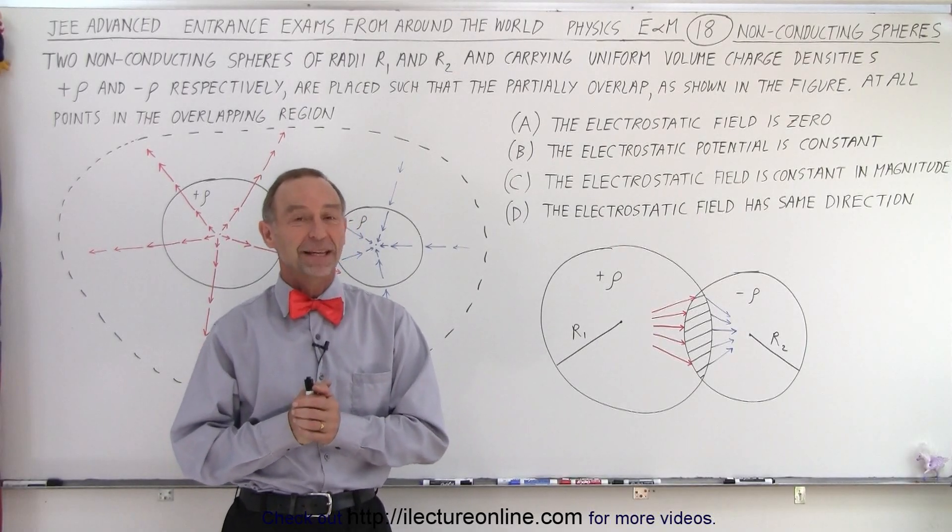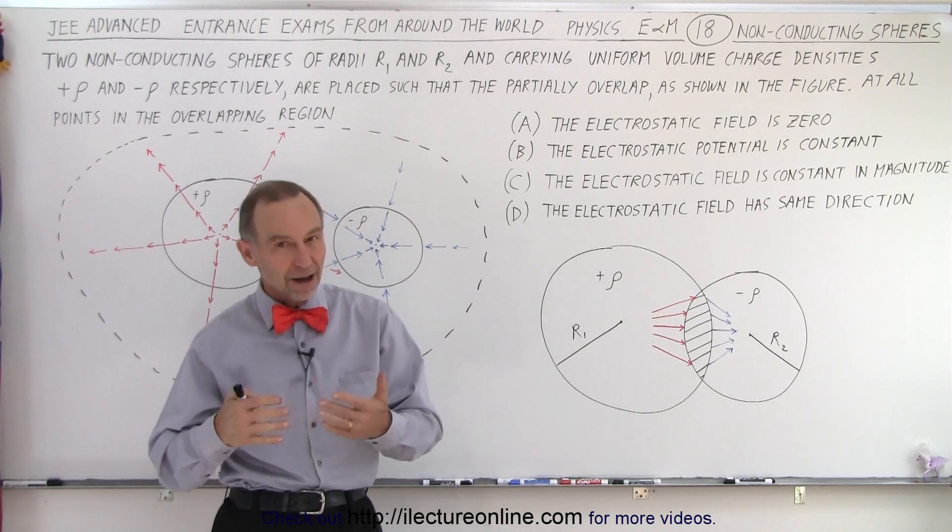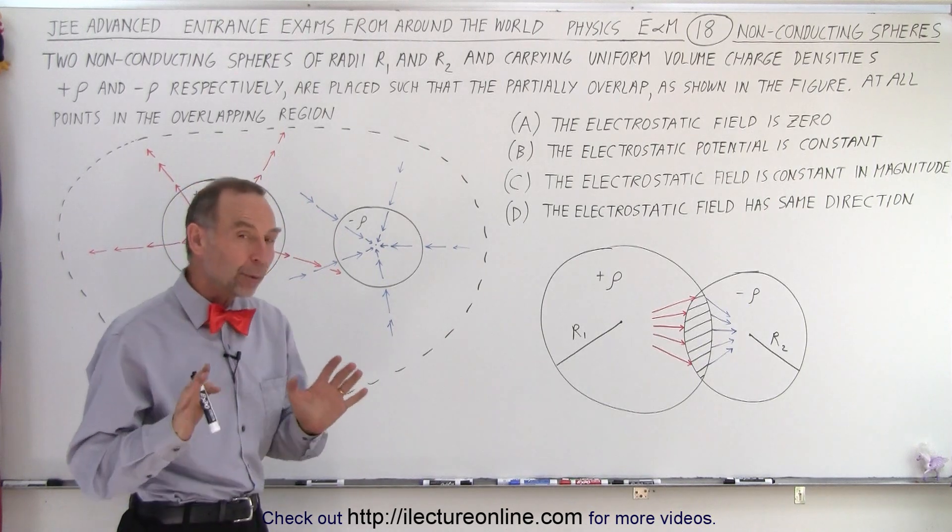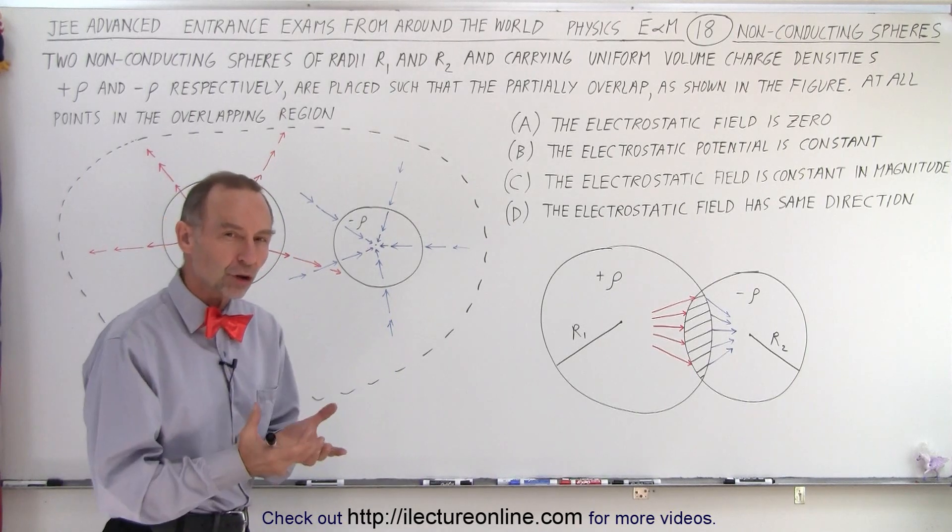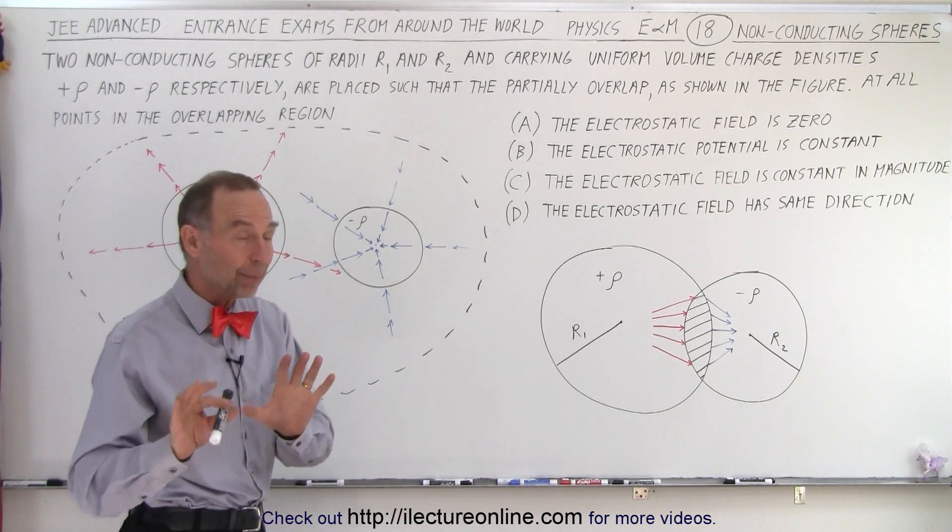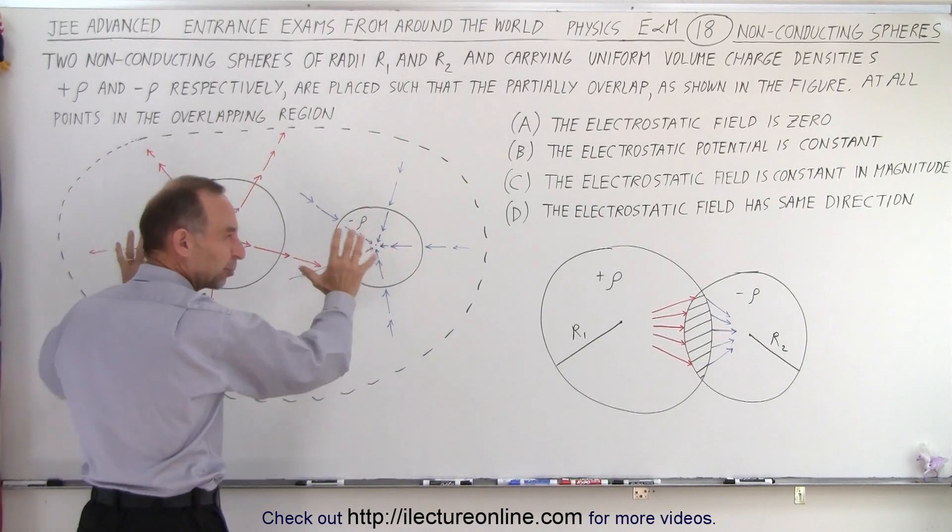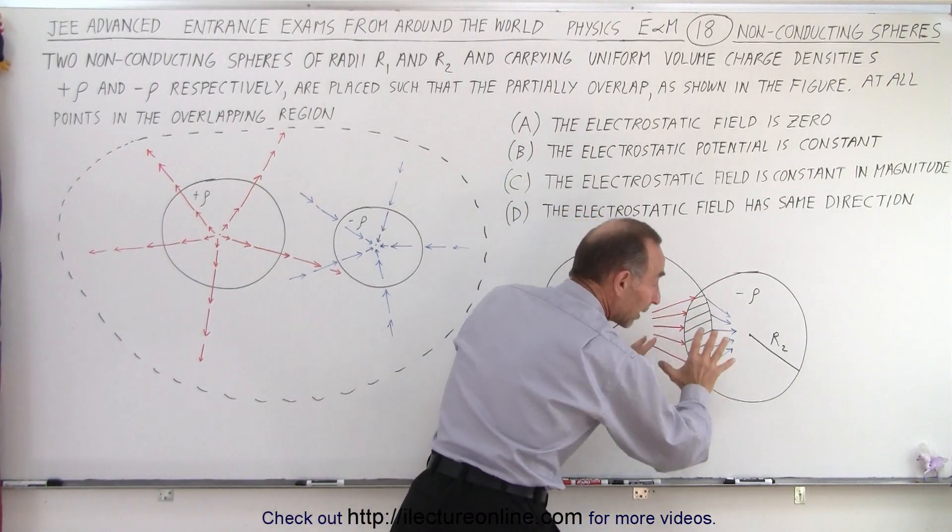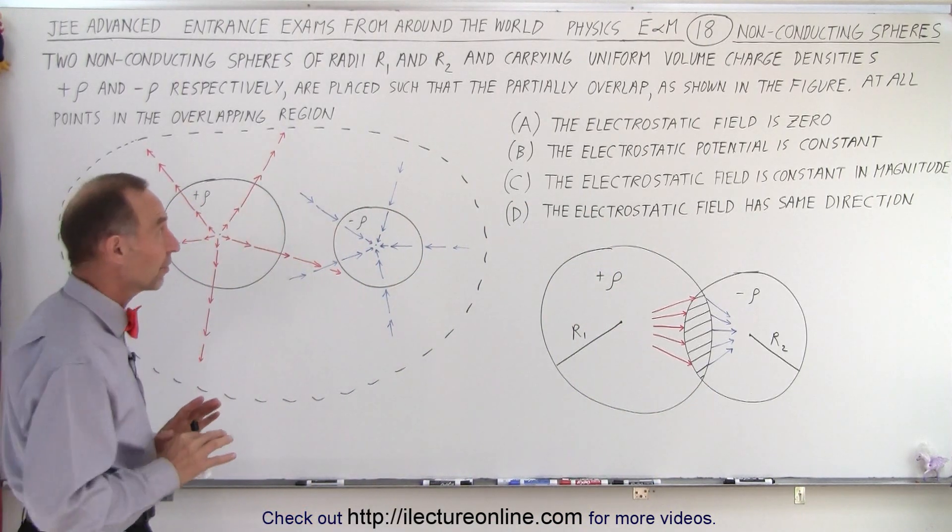Welcome to Electronline, and here's another challenging question from the JEE Advanced Test on physics, specifically on electricity and magnetism. What we have in front of us is two non-conducting spheres, and they're filled with charge so that the charges cannot move. Keep in mind that on the test, what's inside the dashed line here was not part of the test. I just put it on the board already to save some time. And anything in color here, the red and the blue lines, were not part of the test either.